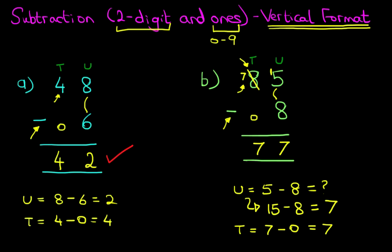And that is our answer. 85 minus 8 equals 77. So that is subtraction of a two-digit number and ones using the vertical format.